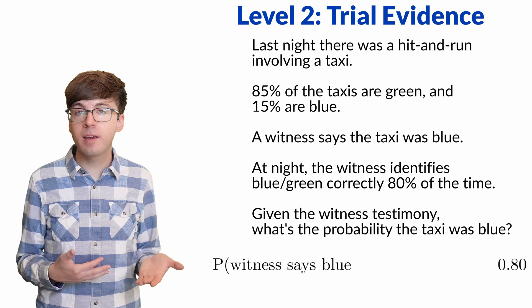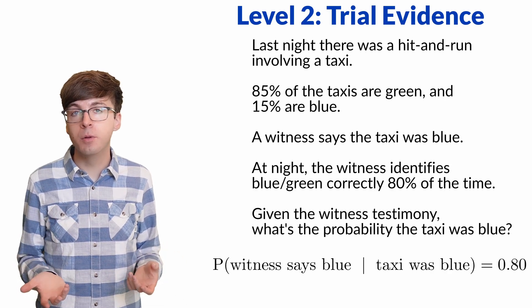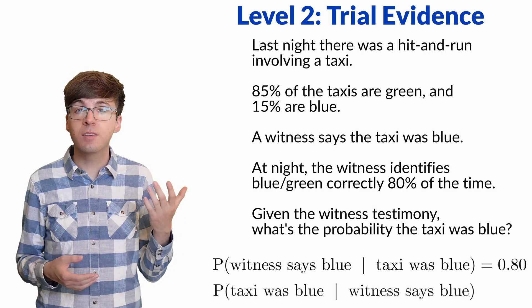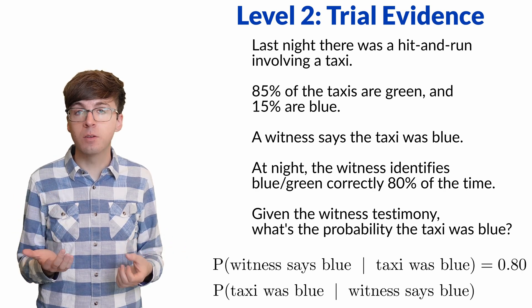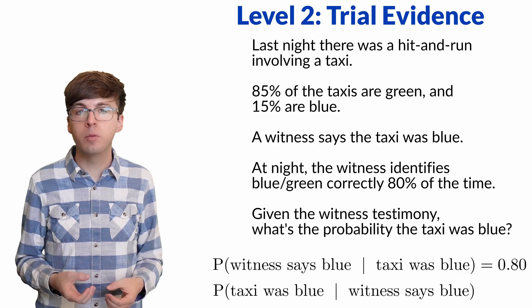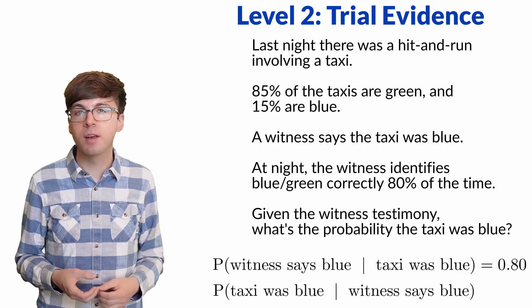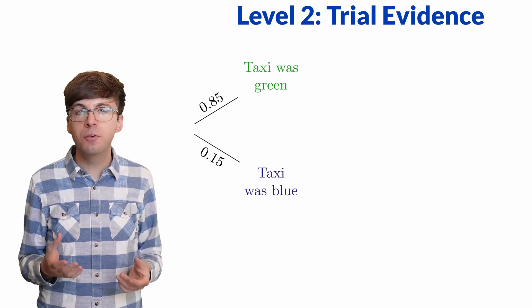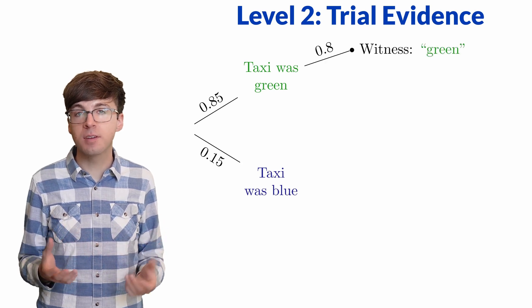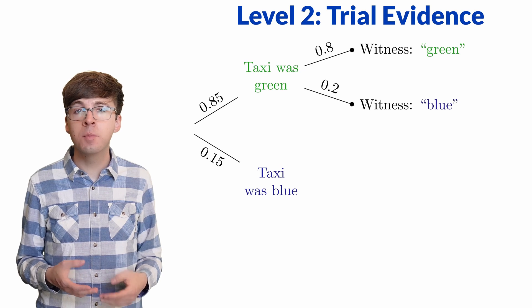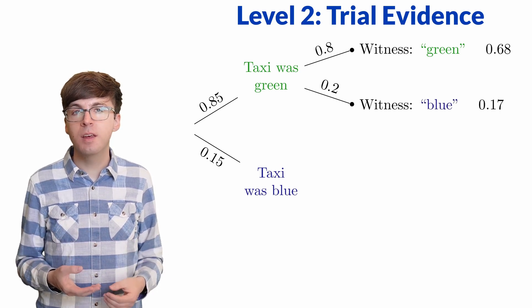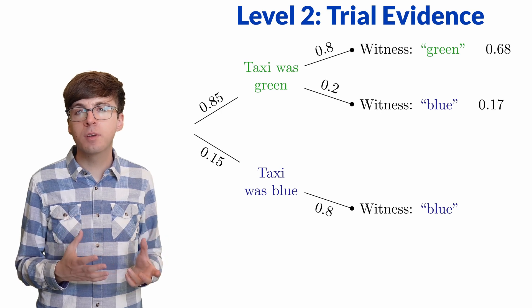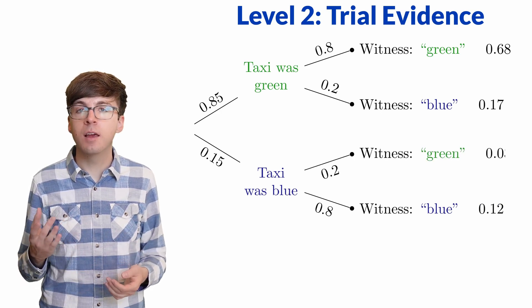The probability the witness says the taxi was blue, given the taxi really was blue, is 80%. But as a member of a jury, we would have to decide the probability the taxi really was blue, given that the witness says it was blue. Reversing those events can completely change the probabilities. Let's draw a probability tree to visualize this. 85% of the taxis are green and 15% are blue. If the taxi is green, the witness has an 80% chance of saying the taxi was green, and the other 20% of the time, the taxi will be misidentified as blue. If the taxi really is blue, then the witness has an 80% chance of saying the taxi was blue, and the other 20% of the time, the witness misidentifies the taxi as being green.